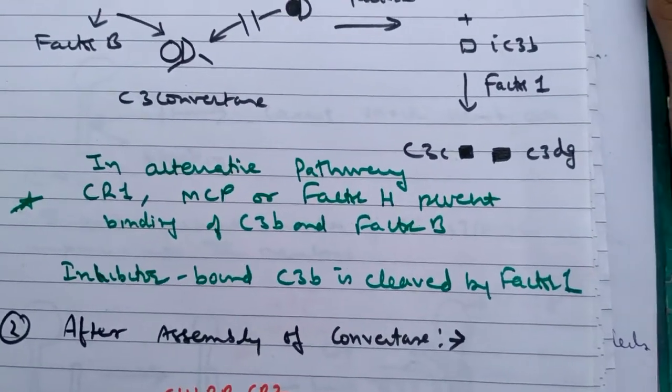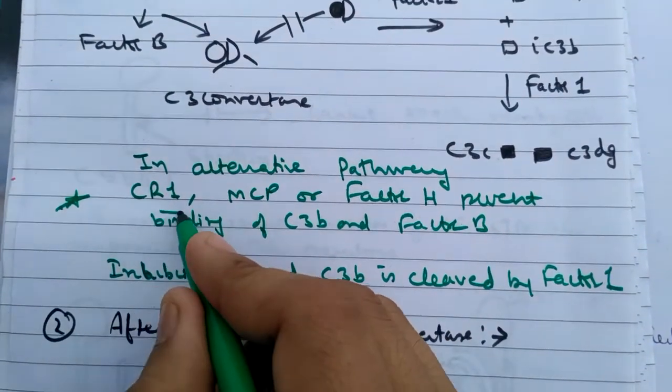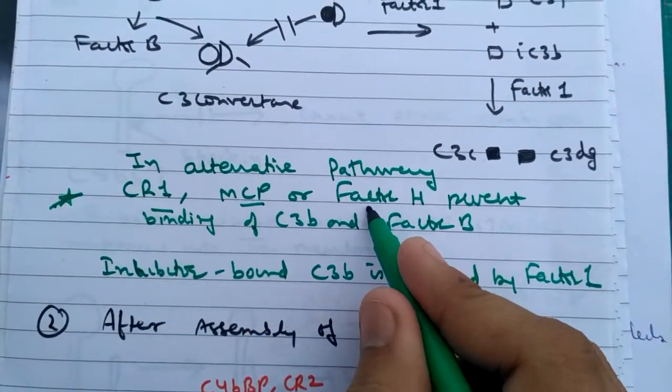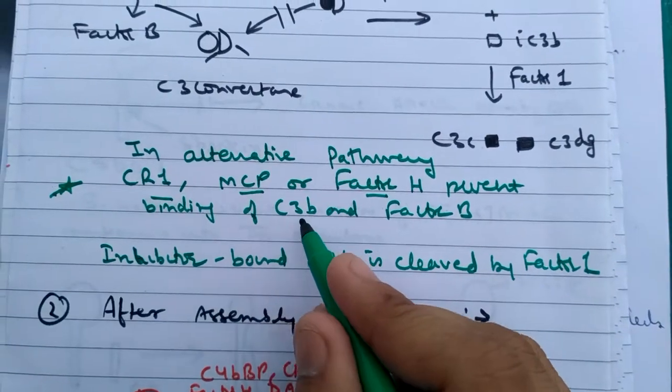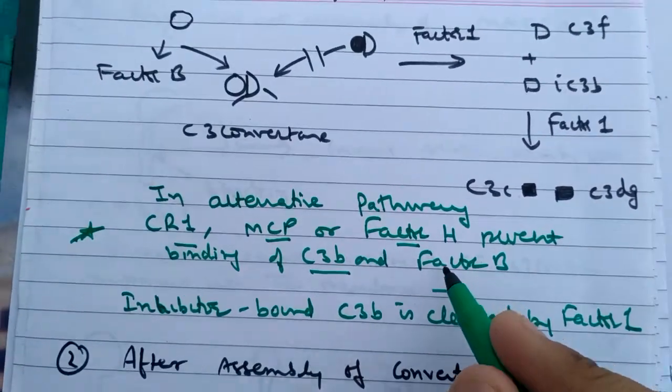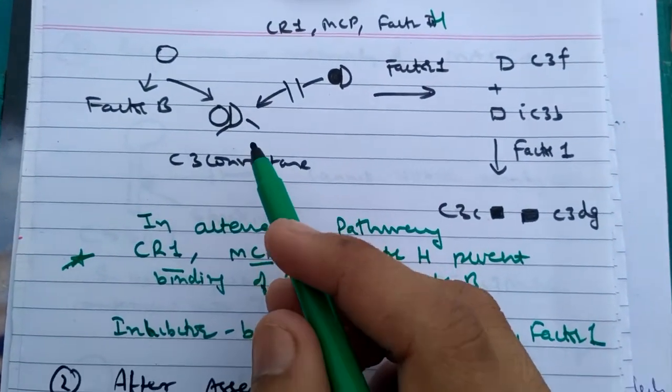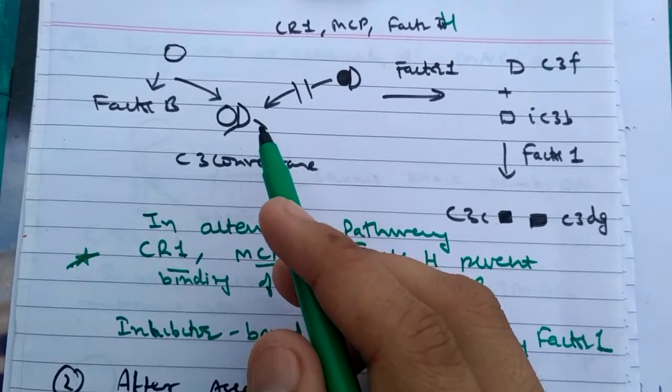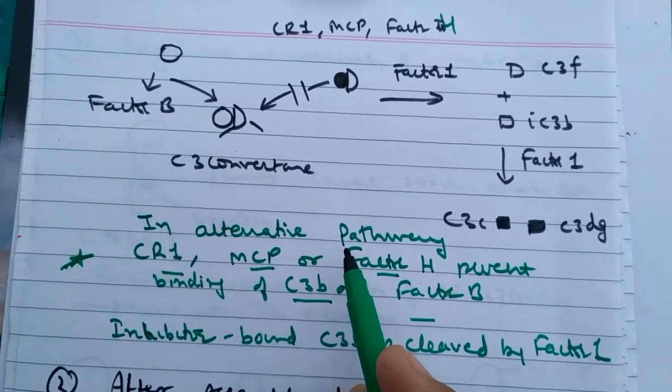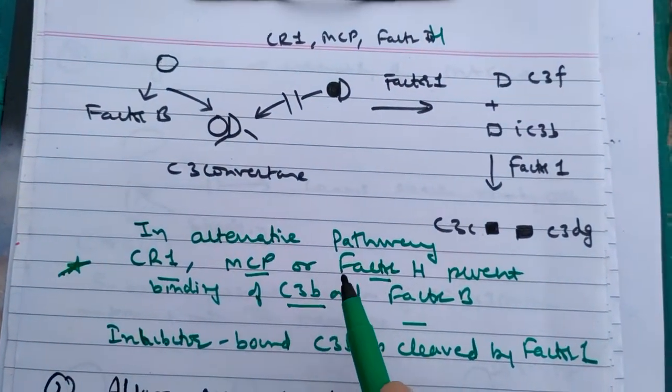Next is in the alternative pathway. CR1, MCP, or factor H prevent the binding of C3B and factor B. So C3B and factor B are very important in the alternative pathway. So these inhibitory proteins prevent their binding.